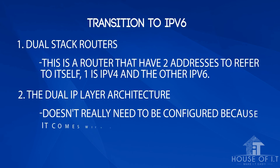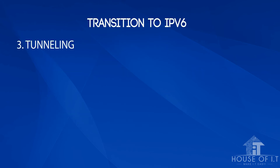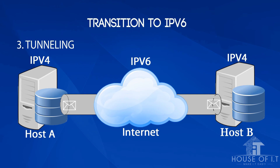Next is the dual IP layer architecture, which doesn't need to be configured because it comes with the Windows package. Then there's tunneling. Imagine you have two IPv4 hosts on opposite sides of the Earth and want to send a packet from host A to host B using the internet, which also uses IPv4. But if the internet suddenly uses IPv6 while both hosts are still on IPv4, tunneling takes your IPv4 packet, puts it inside an IPv6 packet as it passes through the IPv6 internet, then unwraps it upon arrival at the IPv4 host B, and vice versa.